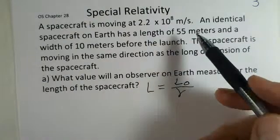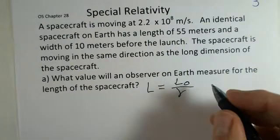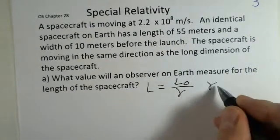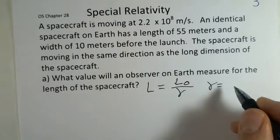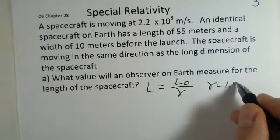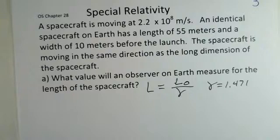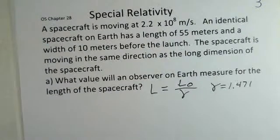This is the speed 2.2×10⁸. Perhaps you've seen the other video that had this value, but work it out yourself. Gamma is 1.471 as a value.